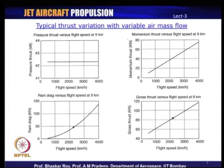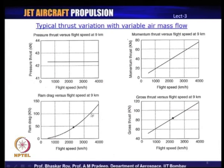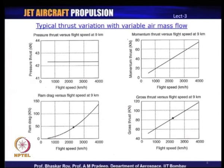Holding air mass flow constant requires a certain design of the intake system, which is often not a straightforward approach. When air mass flow varies with flight speed, the momentum thrust would increase with flight speed because the ram drag now has a non-linear characteristic — varying non-linearly with both changing air mass flow and changing flight speed. The gross thrust would also vary since air mass flow is now changing.